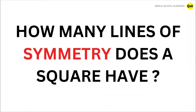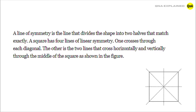How many lines of symmetry does a square have? A line of symmetry is the line that divides the shape into two halves that match exactly. A square has four lines of symmetry.